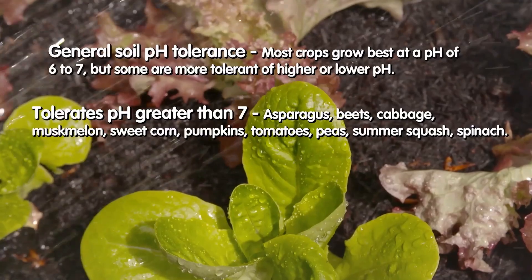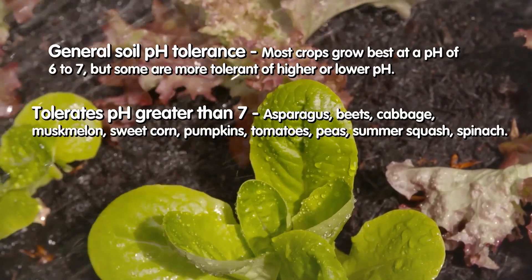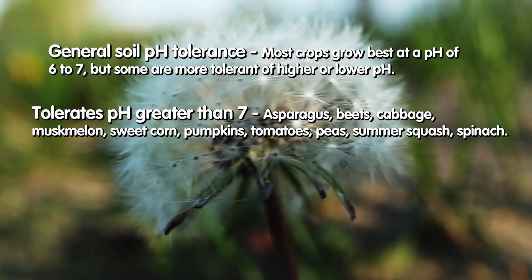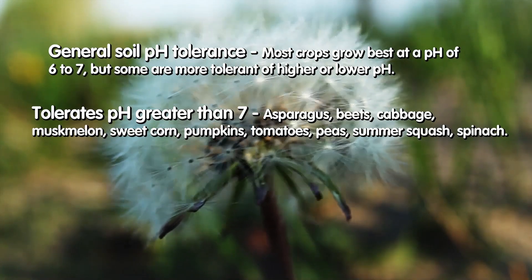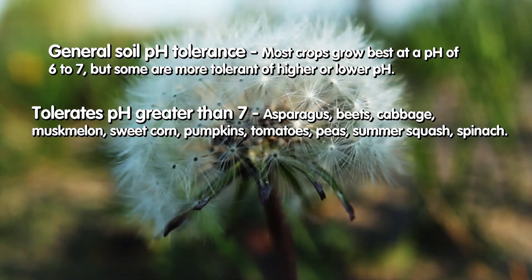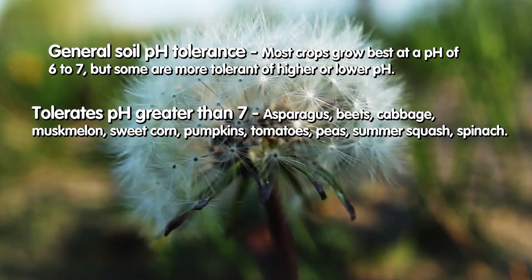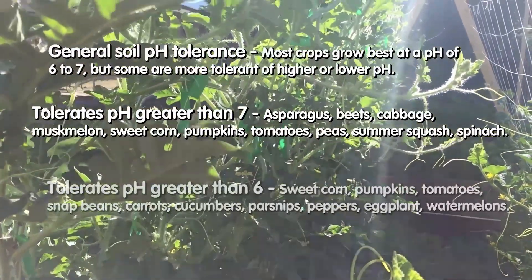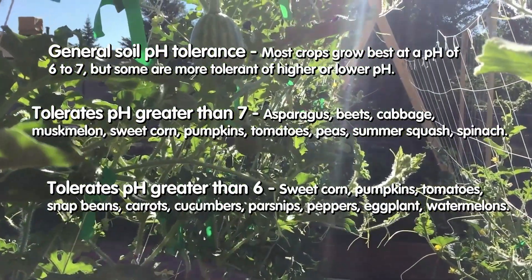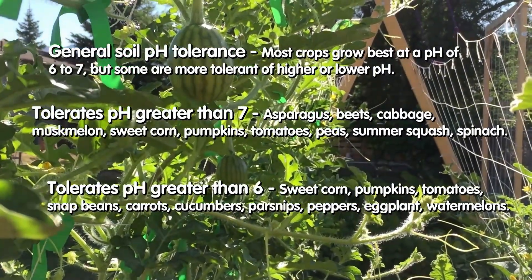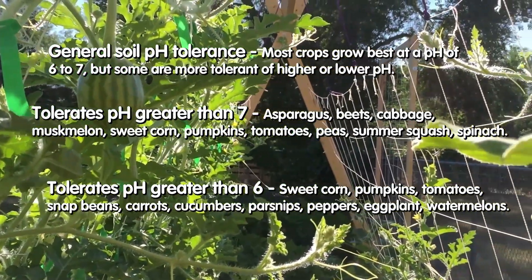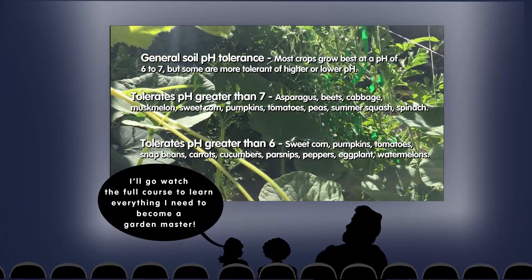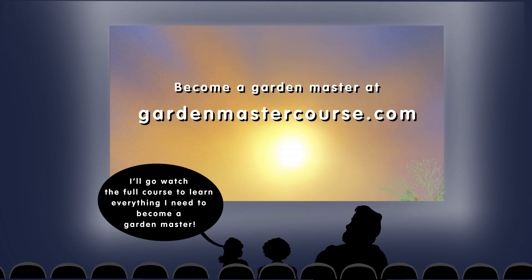...asparagus, beets, cabbage, muskmelon, sweet corn, pumpkins, tomatoes, peas, summer squash, and spinach don't have a problem with higher pH. I've never grown such beautiful spinach as in Oregon where we have really high calcium rates — 85 percent calcium when we talk about cation balance. Some of those plants actually grow better at higher pH. There are also crops that will tolerate a pH less than six: sweet corn, pumpkins, tomatoes, snap beans, carrots, cucumbers, parsnips, peppers, eggplants, and watermelons. Notice that some overlap both categories — making them nicely tolerant crops.